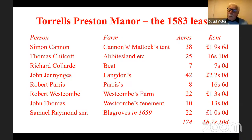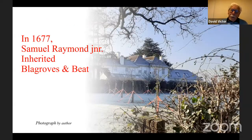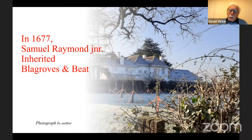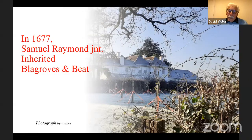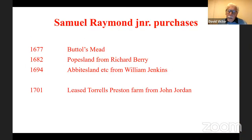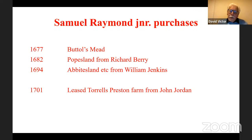I'd like to talk about a couple of people who took farms because it's interesting to look at what freedoms they had to develop their fortunes. Starting with Samuel Raymond at Blagros: Samuel Raymond Jr. inherited it in 1677 and also inherited one of the other small ones because his sister had bought it and died within a year of the father. So he had a significant bit of land in the manor, owned on a 2,000-year lease. He then went on a buying spree over the next 20-odd years, buying Bucklesmead, Popesland, Abbotsland, and leasing Torrells Preston Farm on a 21-year lease. He built up really quite a significant holding across the whole of the manor.